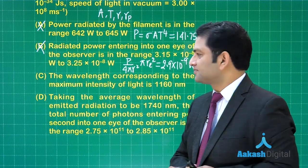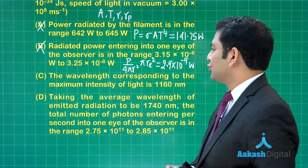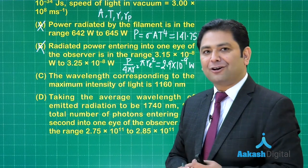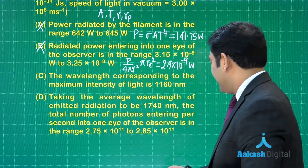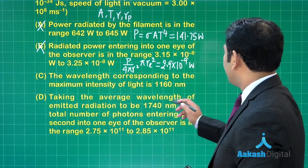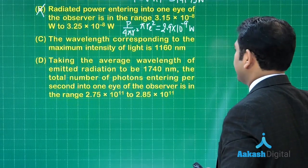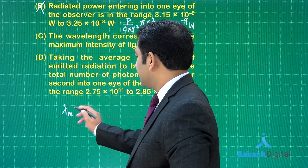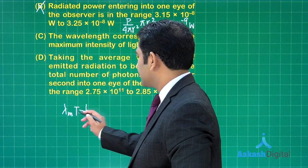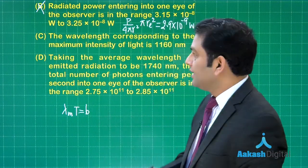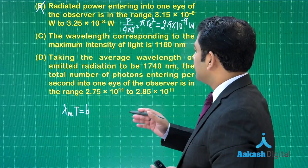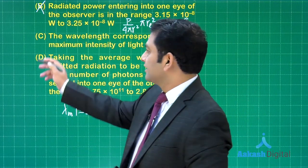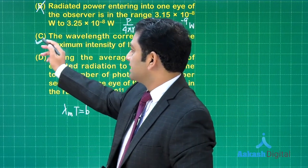Let us go for option number C, the wavelength corresponding to maximum intensity. Now Wien's displacement law has to be invoked. What does Wien's displacement law say? That comes out to be λ_m multiplied by T equals Wien's constant, let me represent by b, the value is given there. When you do this you would be getting 1160 nanometer as the wavelength, so option number C is the correct one.